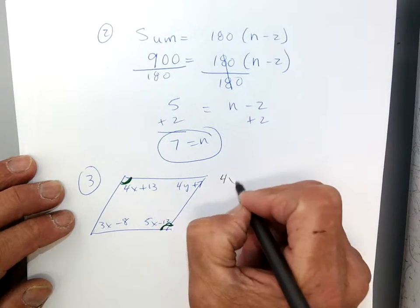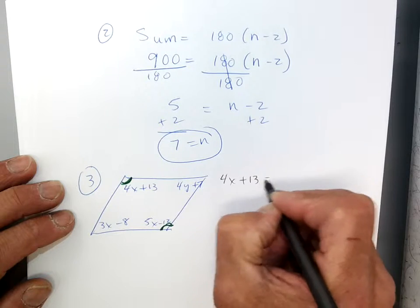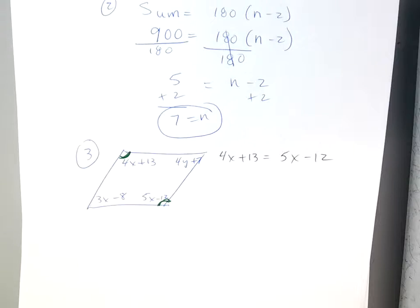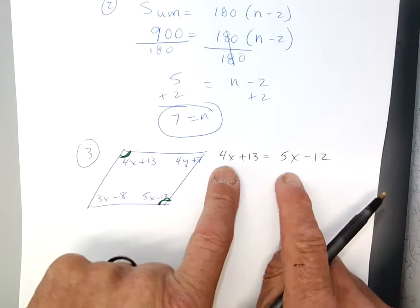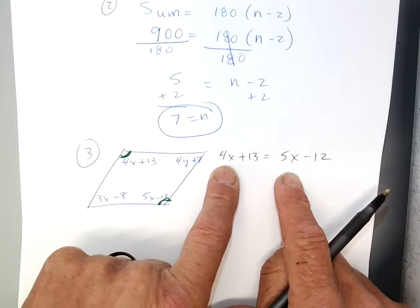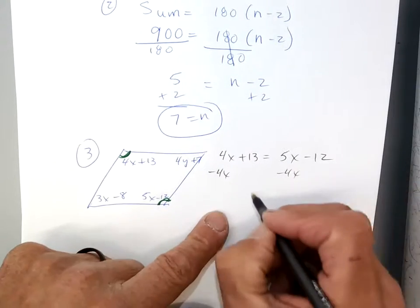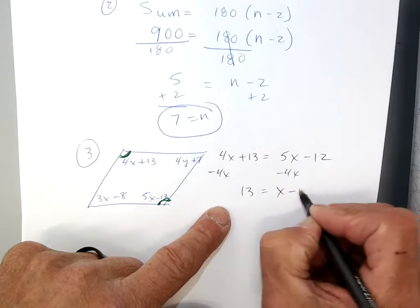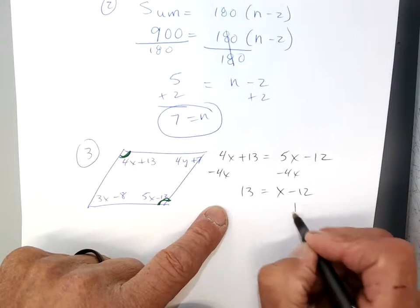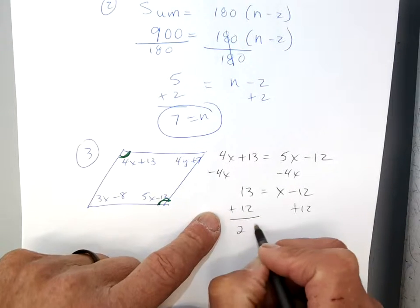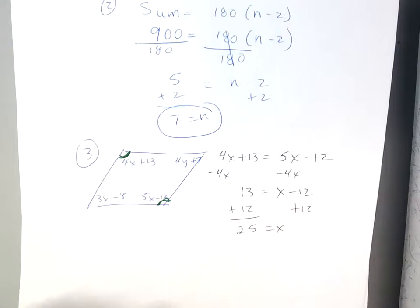Once I get that, I can plug it in. So let's start right there with opposite angles being equal. So I can take my 4x plus 13 and set it equal to my 5x minus 12, okay? And then I'm just going to solve, all right? X is on both sides. I like to get rid of the smallest x. So I'm going to go minus 4x minus 4x gives me a 13 equals a 1x minus 12, plus 12, plus 12, and I get 25 is equal to x, okay?